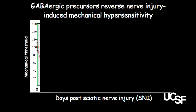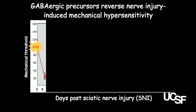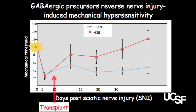The next question was whether these MGE transplants can reverse the mechanical hypersensitivity induced by nerve injury, which is one of the hallmarks of neuropathic pain. We made a nerve injury model called SNI for Spare Nerve Injury. Mechanical thresholds after nerve injury drop significantly. After the nerve injury, we transplanted the mice either with medium or with cells. The mice that received medium only — the control mice shown in blue — had mechanical thresholds that stayed pretty low and never came back. In red, the animals that received the MGE transplants showed mechanical thresholds that increased progressively over time, and four weeks after transplantation, the mechanical thresholds are back to baseline.